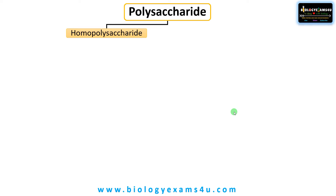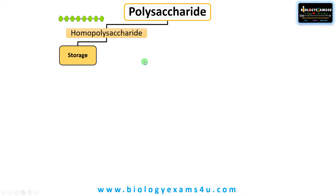Now let us see the classification. Polysaccharides are broadly classified into homopolysaccharides and heteropolysaccharides. Homopolysaccharides are made up of a single type of monosaccharide. They can be further classified into storage and structural homopolysaccharides.